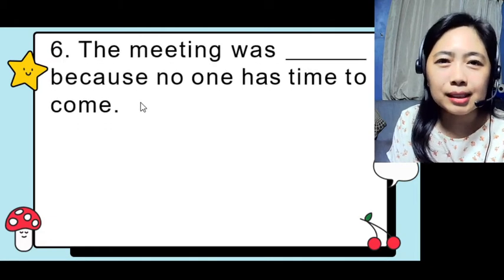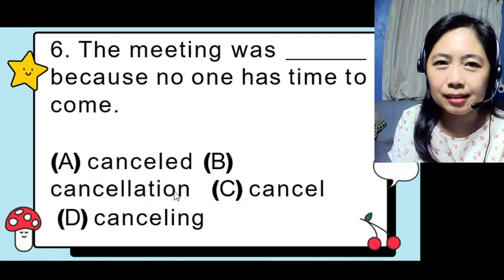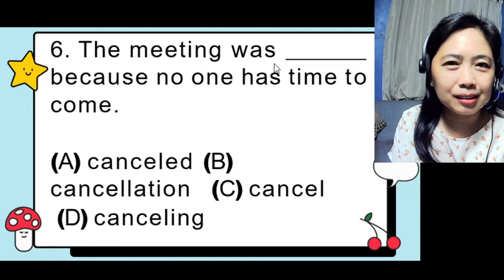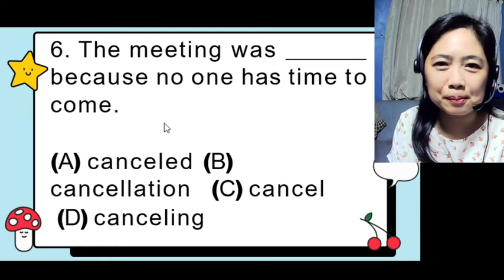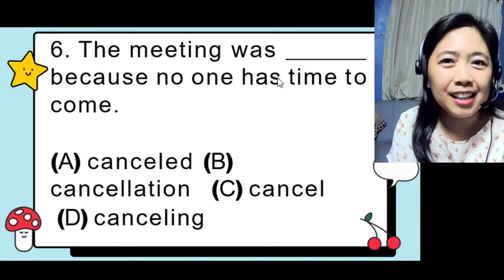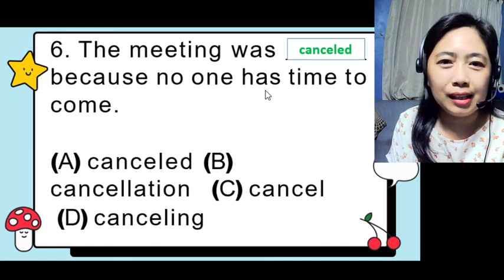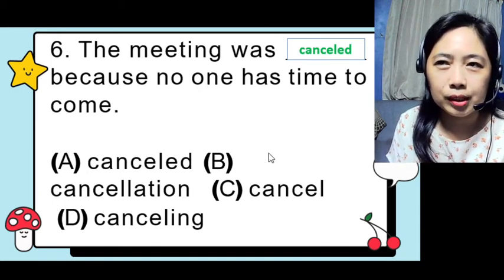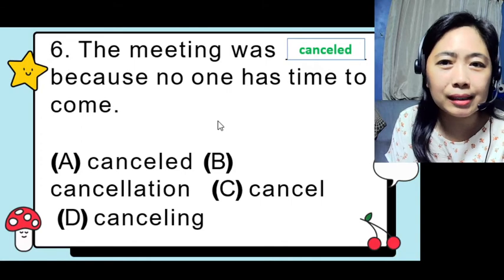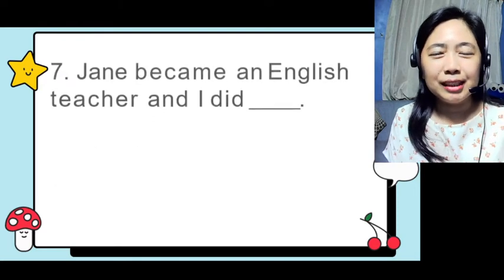Number six: 'The meeting was ___ because no one has time to come.' Choices: cancelled, cancellation, cancel, cancelling. The question is: what happened to the meeting? It was cancelled. We need an adjective here describing the state of the meeting. 'Cancelling' doesn't work — we're not talking about an ongoing action. The correct answer is 'cancelled.'